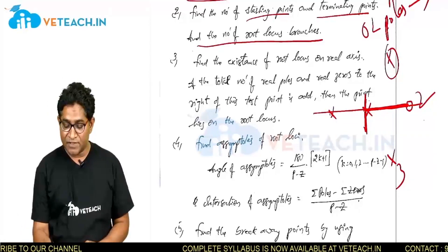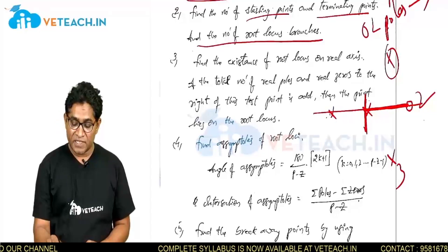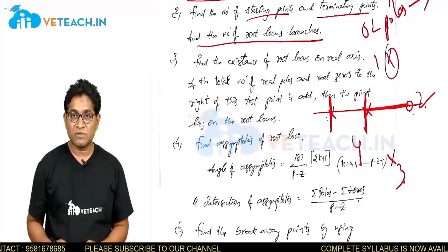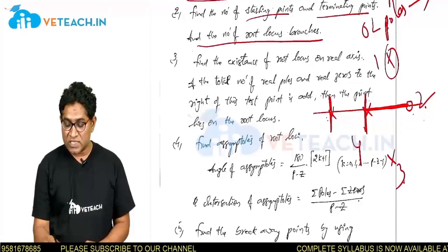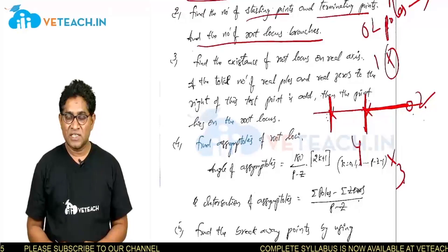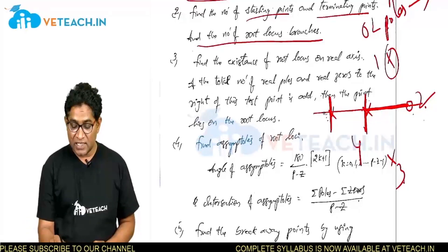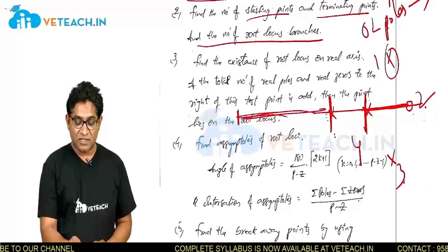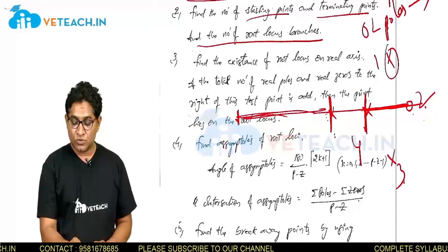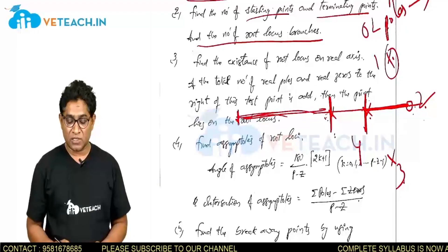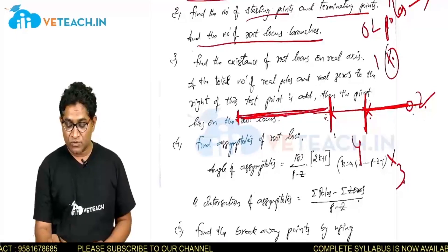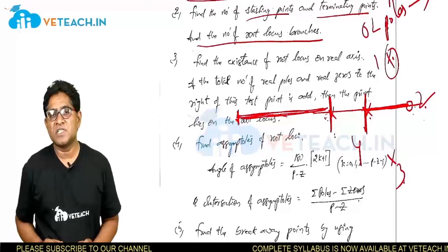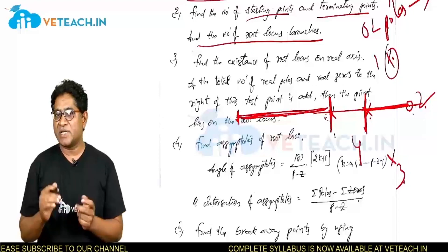Checking another section: if you close at a point and to the right there are 1, 2, 3, 4 — an even number — root locus does not lie there. But between minus infinity and the leftmost pole, to the right there are 1, 2, 3, 4, 5 — an odd number — so root locus lies there. The condition is that the total number of poles and zeros to the right of the section must be odd.